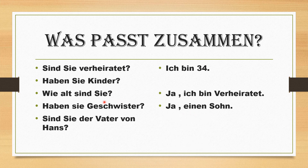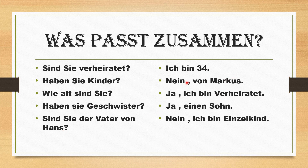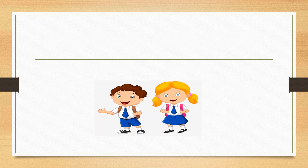'Wie alt sind Sie? Ich bin vierunddreißig' — How old are you? I am thirty-four. 'Haben Sie Geschwister? Nein, ich bin ein Einzelkind' — Do you have siblings? No, I am a single child. From next week I'll provide basic grammar lessons in German as well. For this week we proceed with the basic introduction level only. Vielen Dank — thank you, bye bye.